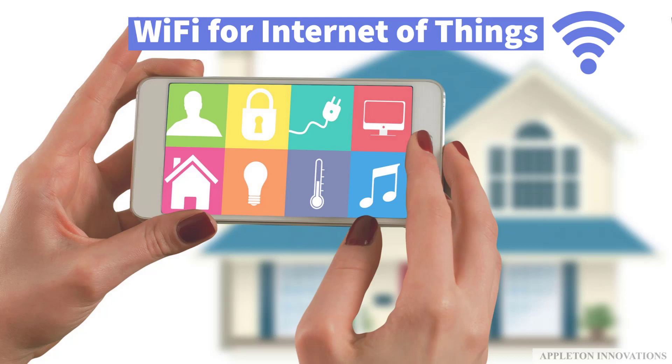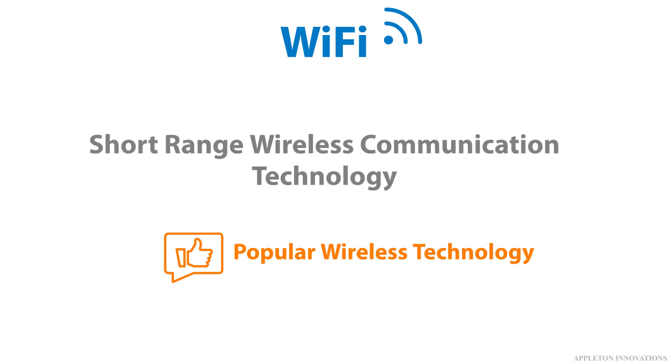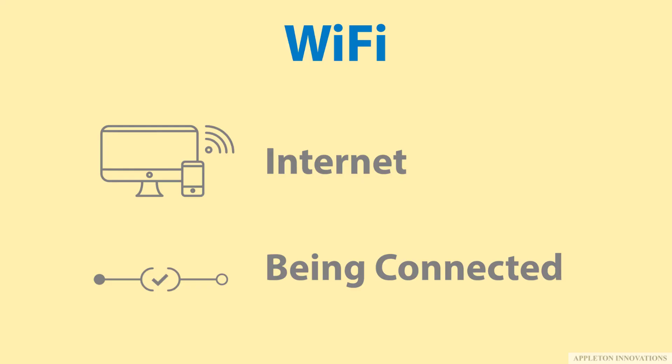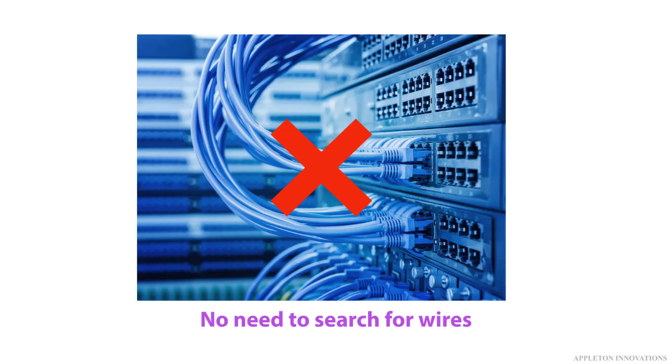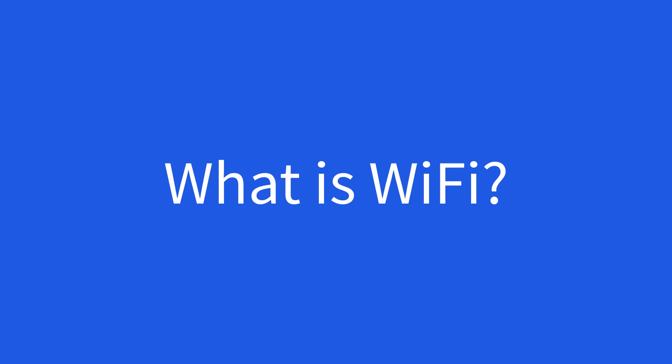Hello, welcome to the lesson on Wi-Fi. Wi-Fi is a short-range wireless communication technology. Most of us think we know what Wi-Fi is, and we often equate Wi-Fi with the internet — being connected — because Wi-Fi in many ways has liberated the internet. There is no more searching for wires; all you need is a password so that you can connect your mobile phone or a device to the internet.